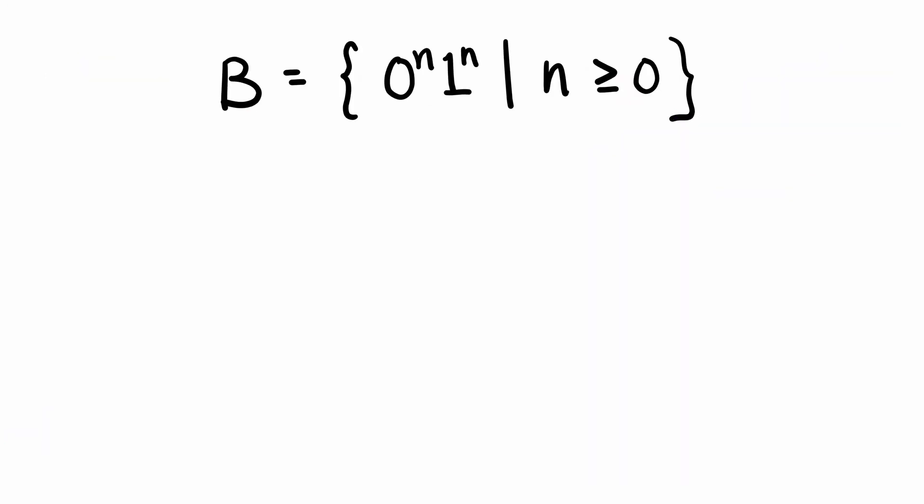Here is an example of a non-regular language. If you try to construct a finite automaton for this language 0 to the n, 1 to the n, you will find that it is impossible, and that is because NFAs and DFAs have a finite amount of memory.